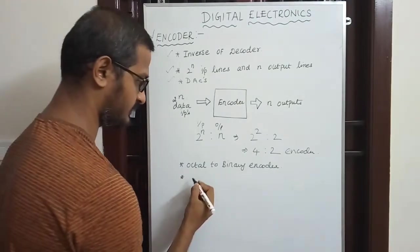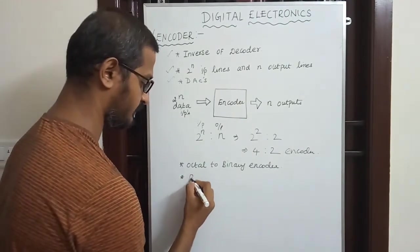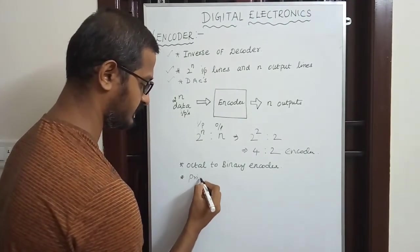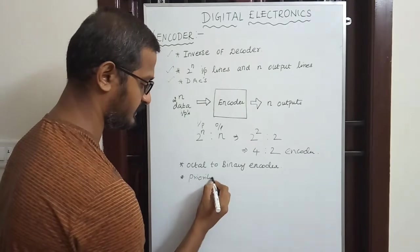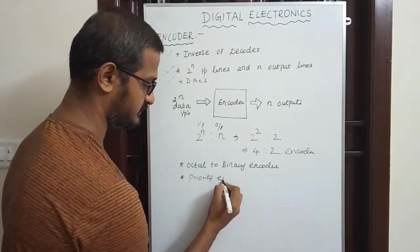The types of encoders include the octal to binary encoder and priority encoders.